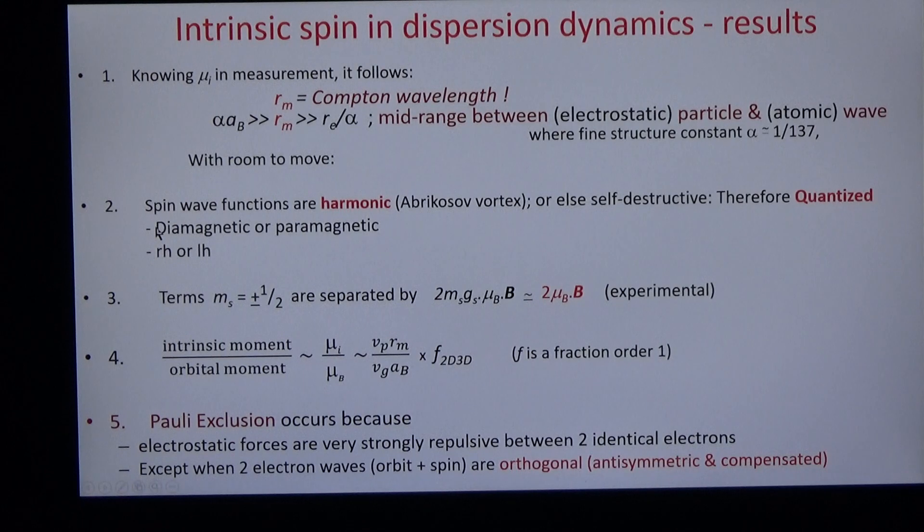Second deduction is that spin wave functions must be harmonic or else self-destructive. They are therefore quantized, either diamagnetic or paramagnetic, right-handed or left-handed, spin up or spin down. And the terms are separated by two Bohr magnetons dot b, as measured experimentally.